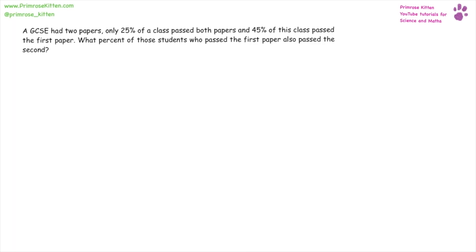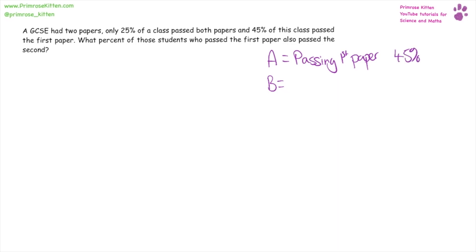This question is a bit more complicated than it looks at the beginning. We have two events: event A and event B. Event A is passing the first test, and this was 45% of the class. Event B was passing both, and this was 25% of the class.